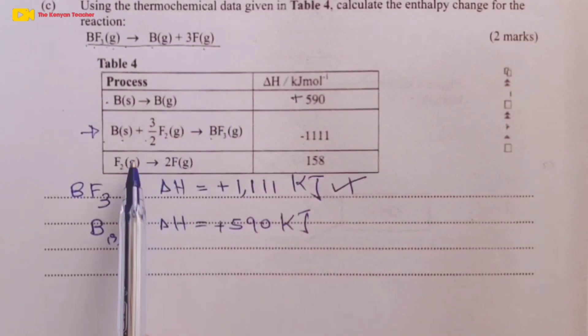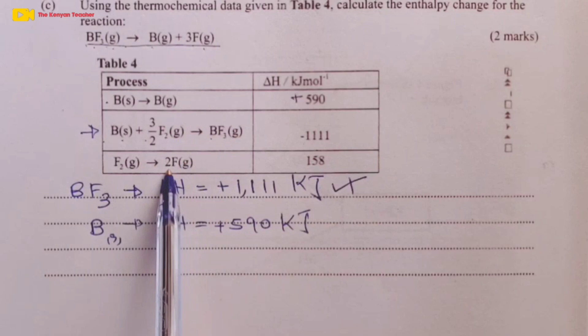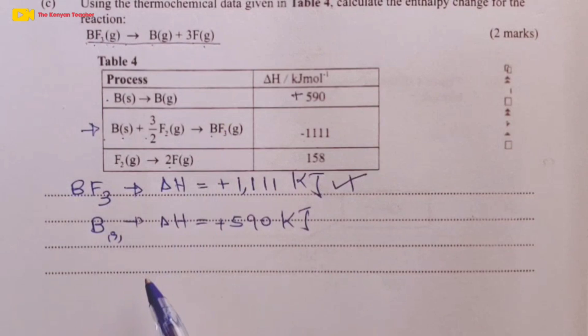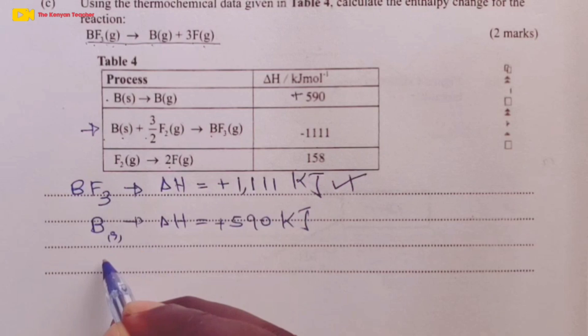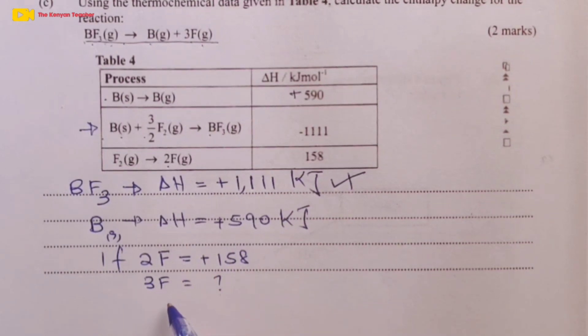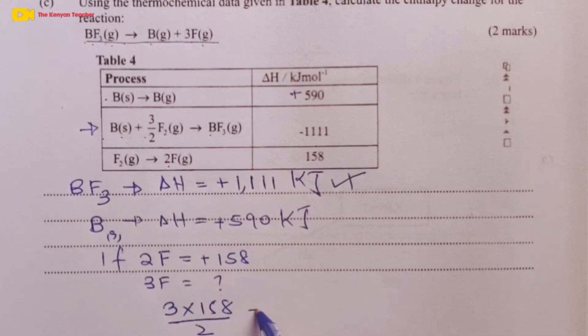Let's look at the second product, 3F. If you look at process 3, we are forming 2 moles of F. But here we have 3 moles. A candidate would use the relation that if 2 moles of F are accompanied by positive 158 kilojoules, what about 3 moles? Doing a quick cross multiplication, we would have 3 multiplied by 158 divided by 2. And that would give 237 kilojoules of energy.